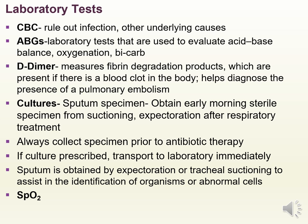Lab tests help rule out different conditions. CBCs help rule out infections. ABGs evaluate acid-base balance, oxygenation, and bicarbonate levels. A D-dimer may be used if pulmonary embolism or a blood clot is suspected. Sputum cultures are obtained early in the morning — ensure the patient's mouth is cleaned prior, use sterile technique, and collect from suctioning or expectoration after respiratory treatments. Always collect sputum prior to starting antibiotics. Transport to the lab immediately to identify organisms or abnormal cells. SPO2 is also measured.